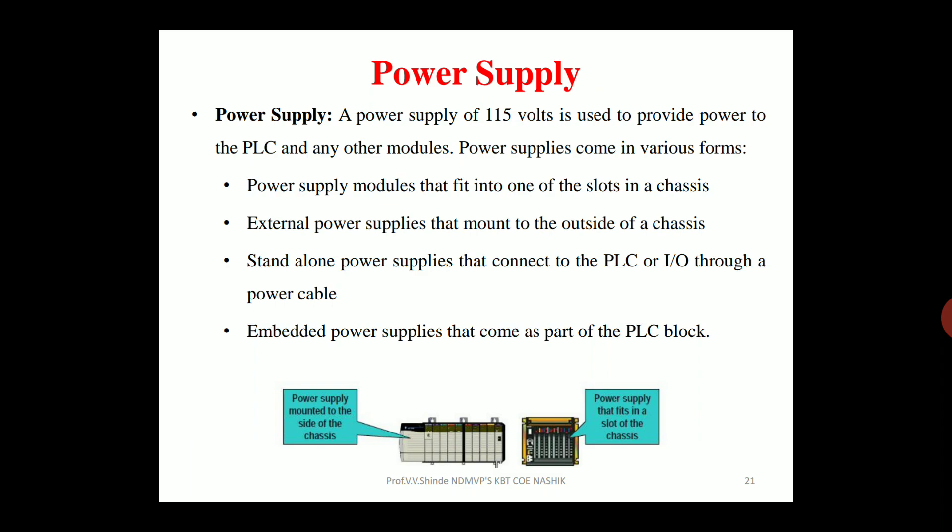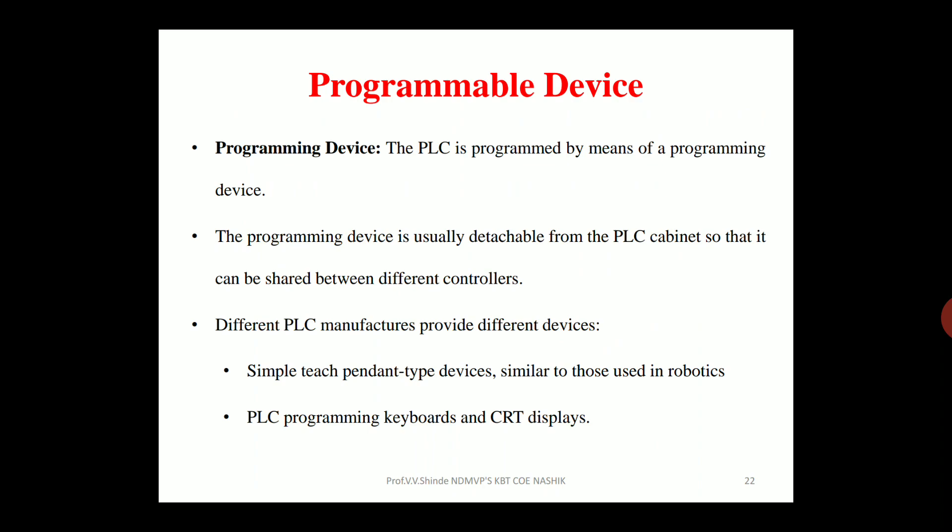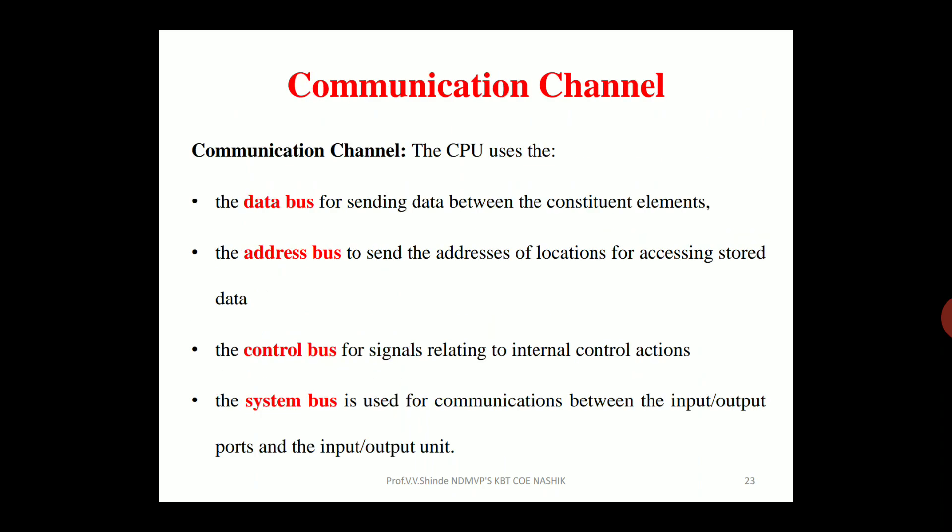The last important components are power supply and programming devices. Power supply is required for every electronic device — it can be external power supplies that mount to the outside of the chassis, or embedded power supplies that come as part of the PLC block. The PLC is programmed by means of programming devices, which are usually detachable from the PLC cabinet so that they can be shared between different controllers.